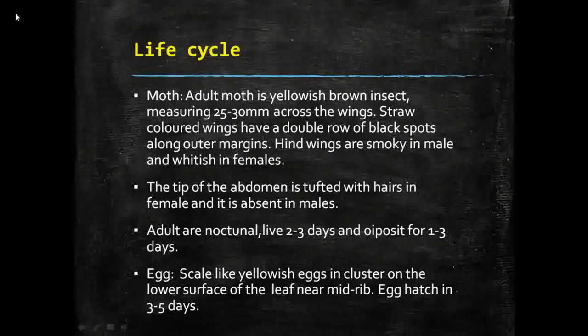Moving to the life cycle of this pest — as it belongs to order Lepidoptera, it undergoes complete metamorphosis. The stages are: adult moth, egg, larva or caterpillar, and pupa, which again develops into a moth. The moth is a yellowish-brown colored insect measuring about 25 to 30 millimeters across the wings.